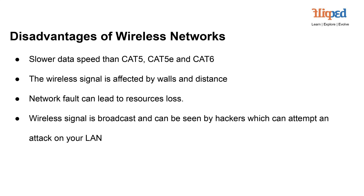Along with the advantages, wireless networks also come with certain disadvantages. Slower Data Speed: Wireless networks, especially older ones or those with lower quality components, may offer slower data speeds compared to wired networks using technologies like CAT5, CAT5E.